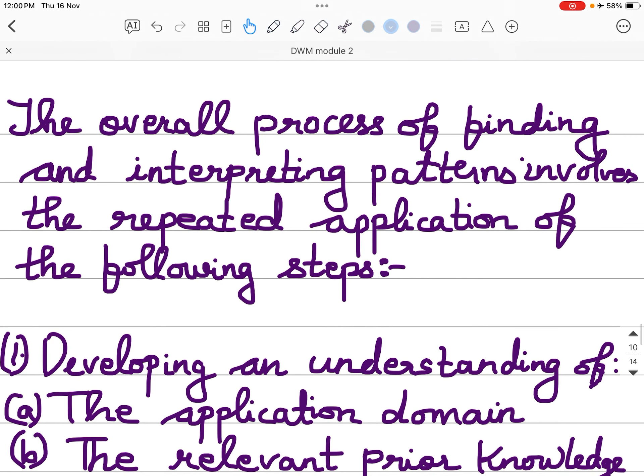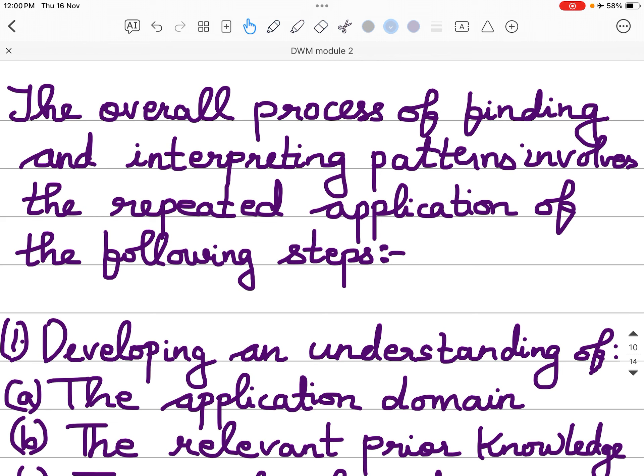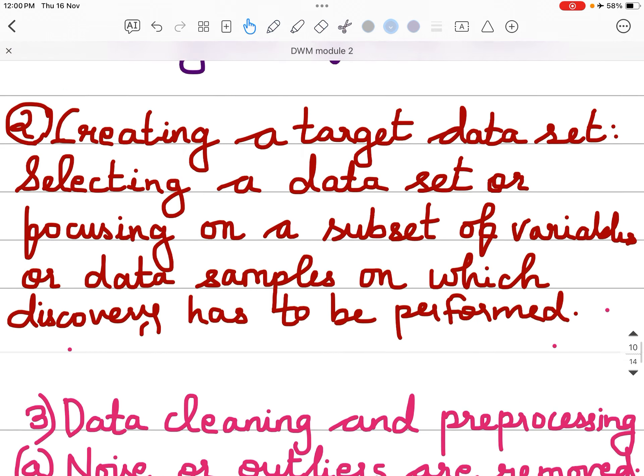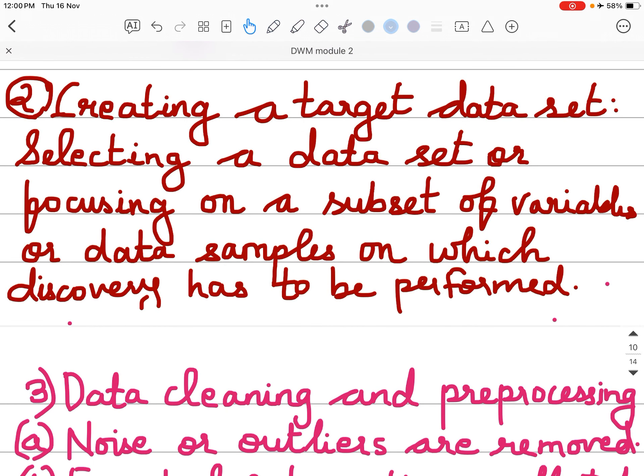The overall process of finding and interpreting patterns involves the repeated application of the following steps. Developing an understanding of the application domain, the relevant prior knowledge, the goals of the end user. Creating a target data set. Selecting a data set or focusing on a subset of variables or data samples on which discovery has to be performed.